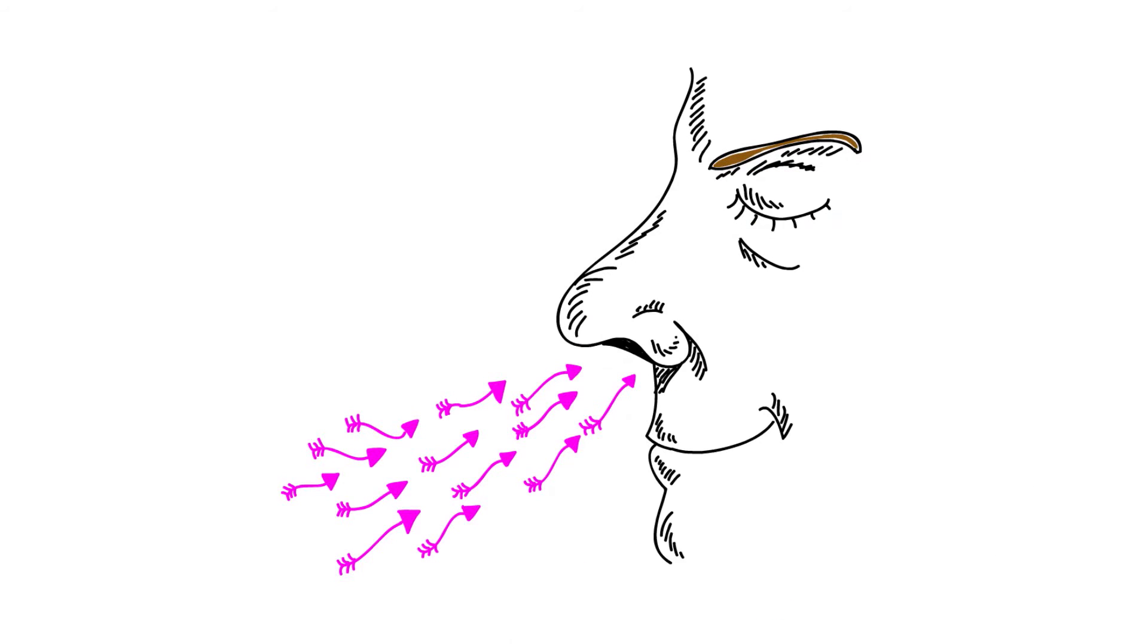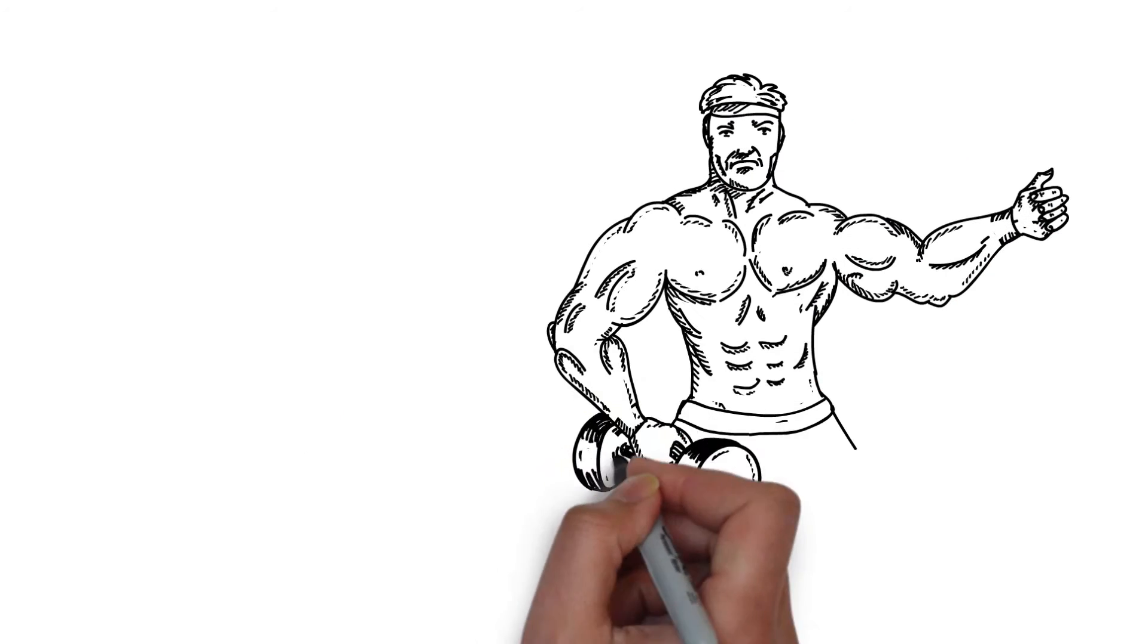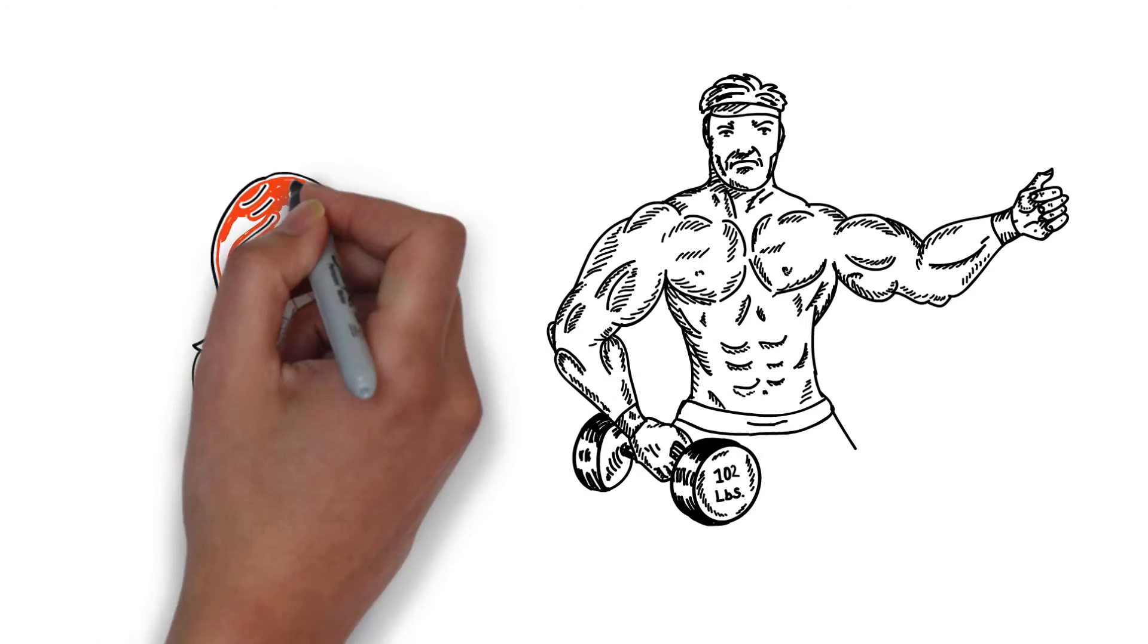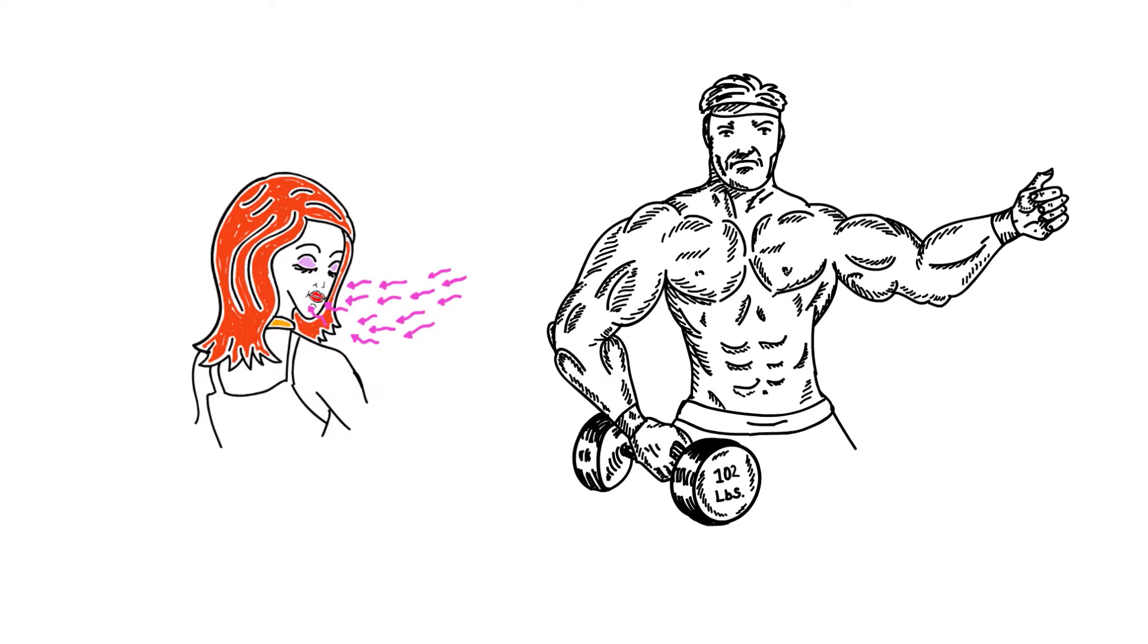Pheromones are chemicals that exist in our sweat and are believed to release neurotransmitters that directly modify the behavior of the opposite sex, such as triggering sexual excitement.